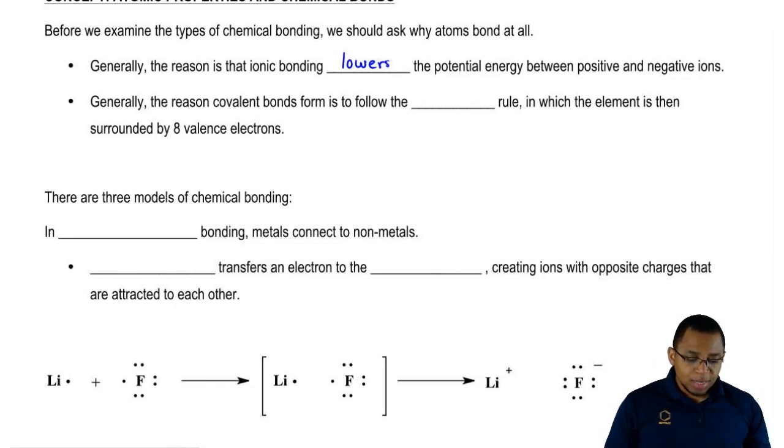Now, generally, the reason that covalent bonds form is to follow what we call the octet rule. We'll learn more about the octet rule later, but just realize for now, the octet rule just means elements are then surrounded by eight valence electrons.